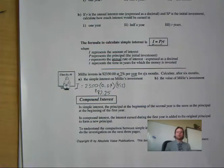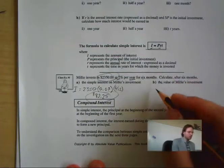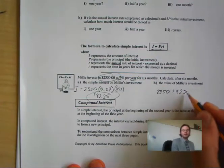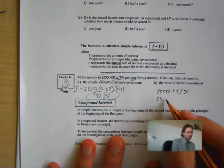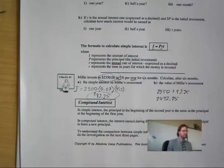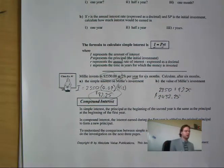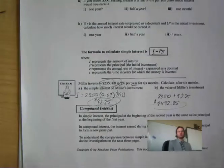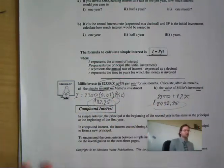Now the next part says: what is the value of Millie's investment? Well, that is her interest added to her initial investment. So I am going to put $2,350 plus $82.25, which gives me a total of $2,432.25. The interest was the amount gained, whereas the investment is the total money. So the value of her investment and the simple interest are slightly different.